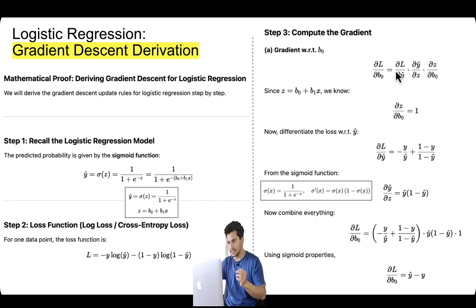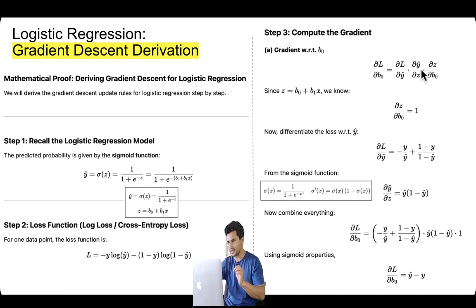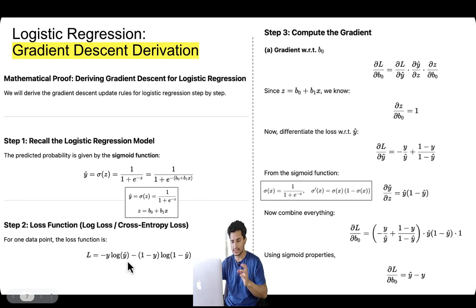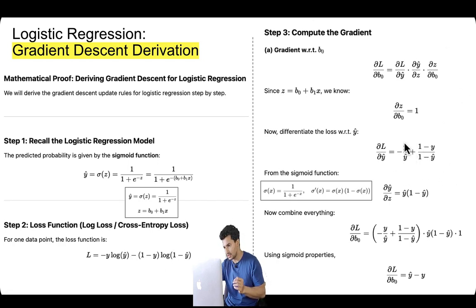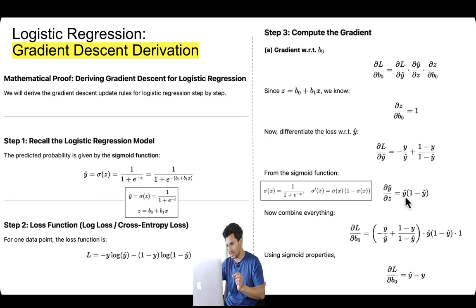Applying the chain rule: ∂L/∂b₀ = (∂L/∂ŷ) · (∂ŷ/∂z) · (∂z/∂b₀). Taking ∂L/∂ŷ: the derivative of -y·log(ŷ) gives -y/ŷ, and the derivative of -(1-y)·log(1-ŷ) gives +(1-y)/(1-ŷ). For ∂ŷ/∂z: the derivative of the sigmoid function is sigmoid·(1 - sigmoid) = ŷ·(1 - ŷ). For ∂z/∂b₀: since z = b₀ + b₁x, the partial derivative with respect to b₀ is 1. You can also derive the sigmoid derivative yourself.